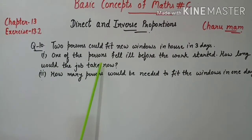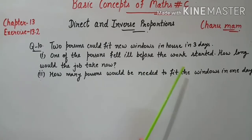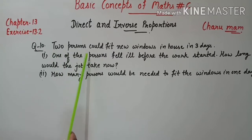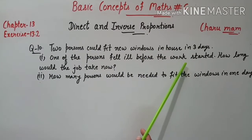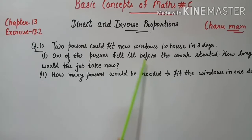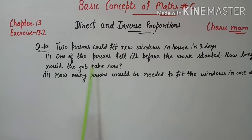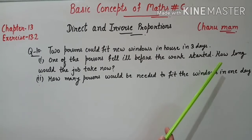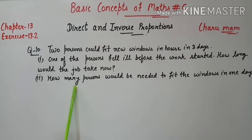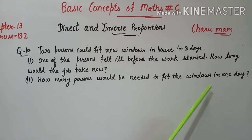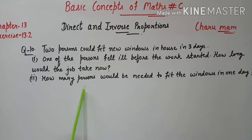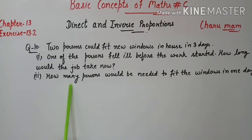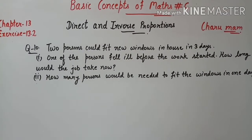First part: One of the persons fell ill before the work started — how long would the job take now? यानि कि 2 persons में से 1 बीमार हो जाए तो उसी job को complete करने में कितने days लगेंगे। Second part: How many persons would be needed to fit the windows in one day? हमें one day में windows fit करने के लिए number of persons find करने हैं।